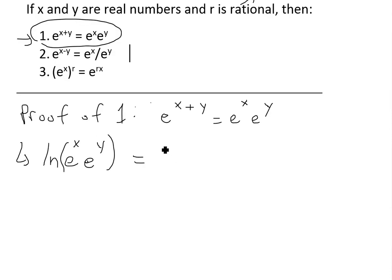We could write this as ln e to the x plus ln e to the y. You can see the proof in the video link below. We can use the exponent law of logarithms here: bring this x down and this y down, so we're left with x times ln e plus y times ln e. And ln e is equal to 1 because log base e of e cancels out. So you're just left with x plus y.